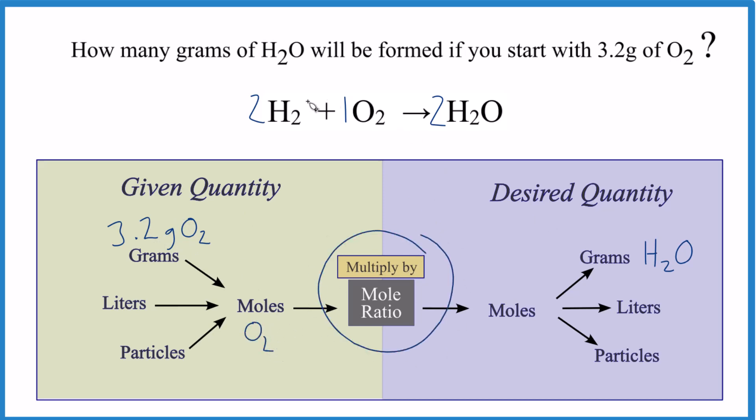Our goal is to take grams, change that to moles of O2, use the ratio from the coefficients to get moles of H2O, which we then just convert back to grams and we're done. So the quickest way to do this is: for every one mole of O2 I have two moles of H2O. That's the ratio.